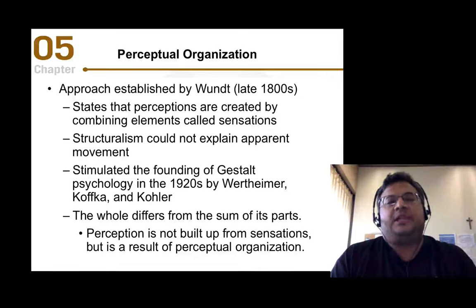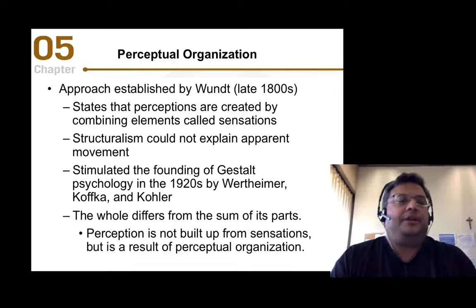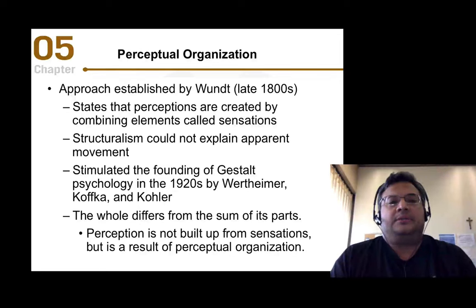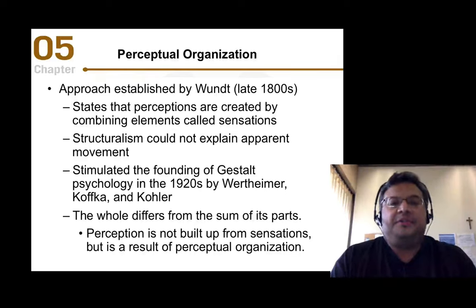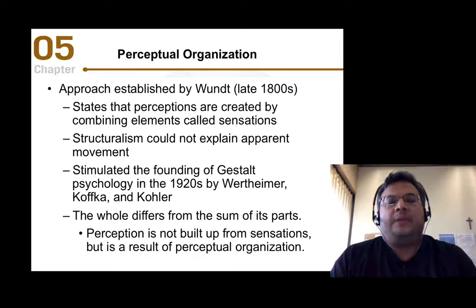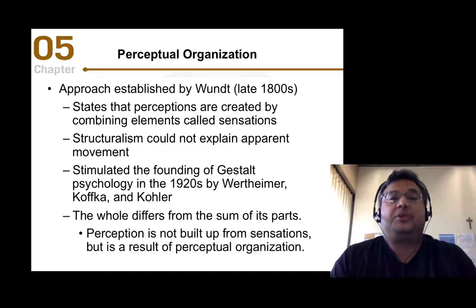This led to another school of thought. The Gestaltists started in the early 1900s. Kafka, Wertheimer, and Köhler are three famous German philosophers and psychologists who were part of the Gestalt movement. They took a different approach than Wundt and the Structuralists did.